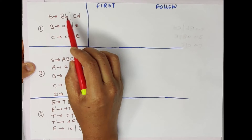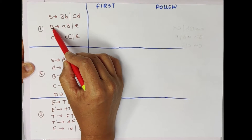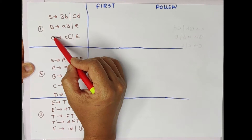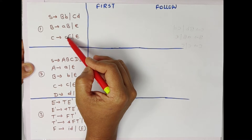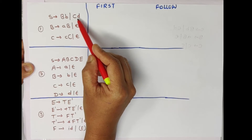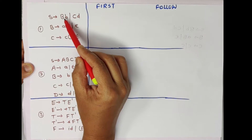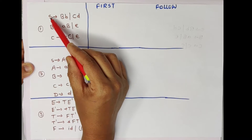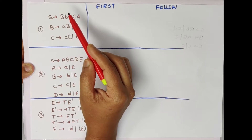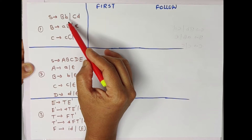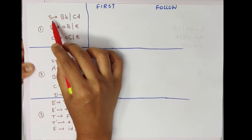FIRST means what? Let us consider S, B, C — these are the variables, and small b, a, c, and d — these are the terminals. So this is the grammar we are having; these are the productions, these are the variables, and S is our starting symbol. So V, T, P, S — four tuples of the grammar.